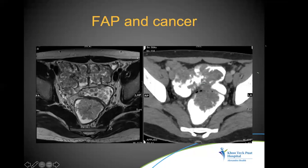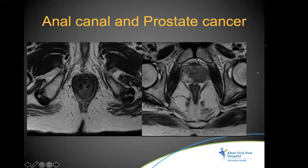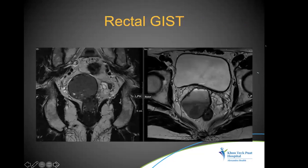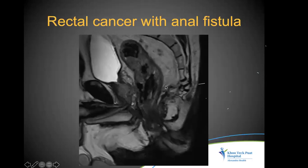Miscellaneous special cases include rectal tumor in the context of polyposis, anal canal adenocarcinomas associated with abnormal signal in the prostate (look for concurrent prostate cancer), exophytic well-circumscribed rectal tumors that may be rectal GIST, and anal fistula cases where a concurrent rectal tumor can be detected incidentally on MRI — we may be the first to detect these.